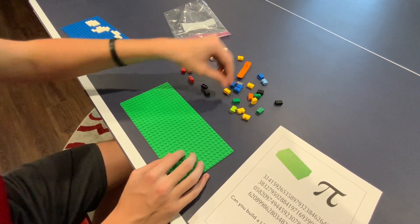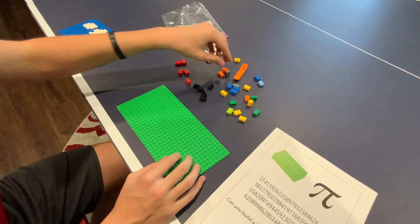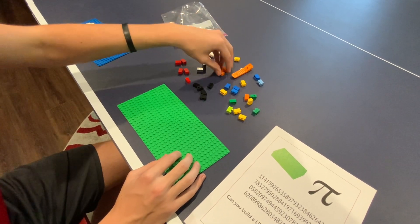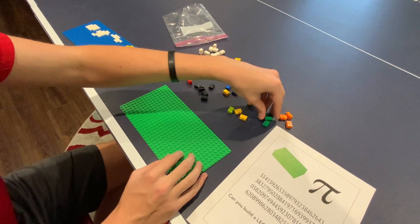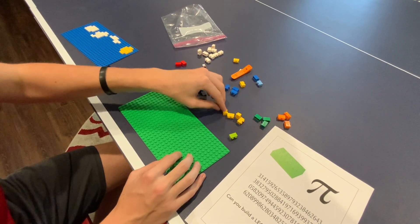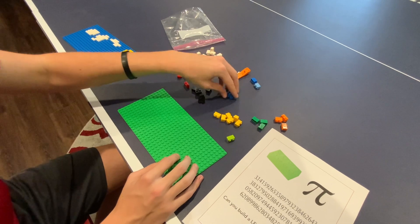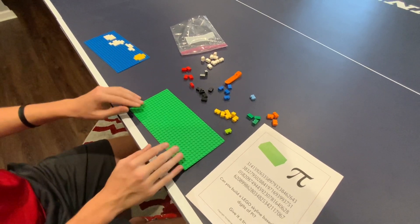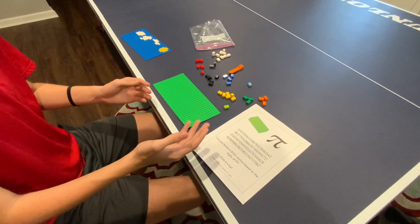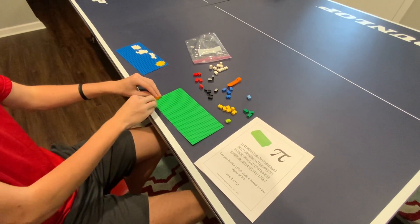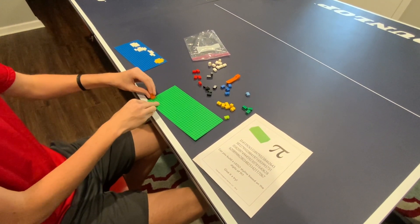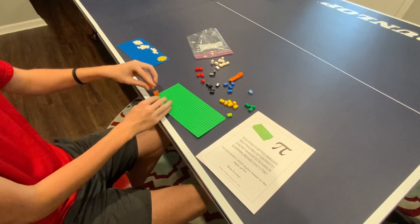Five blacks, two grays, three oranges, three greens, one light green, six yellows, four blues, and one light blue. So the first number of pi is three. So we're going to do this about two studs back. So one, two, three.